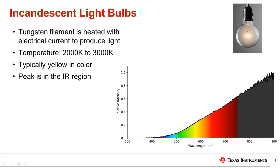The peak for incandescent sources is typically in the infrared region due to the low temperature, and this results in a more yellow light compared with sunlight.